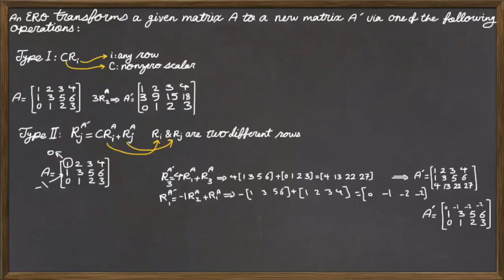In type 3 of our elementary row operations, we interchange rows I and J, where I and J are not equal. This implies that we are looking at two different rows of a given matrix.